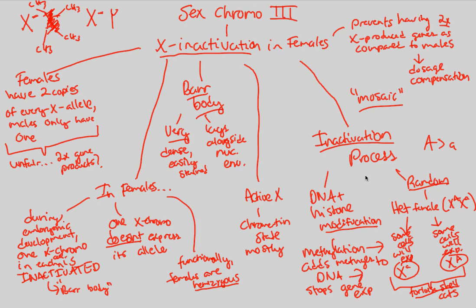Overall, hopefully you now understand that sex chromosomes have a way of combating this unfairness through X-inactivation, which results in one active X and one Barr body. This all happens before birth, during embryonic development, and the inactivation process involves methylation. It's random, and it prevents the doubling of X-produced gene products as compared to males — because we cut this in half: some cells express lowercase, some express uppercase — thus we have dosage compensation.